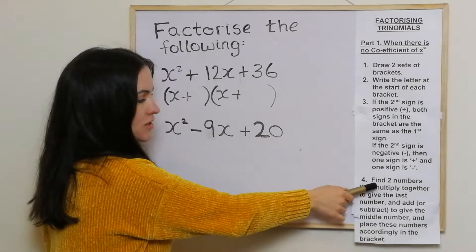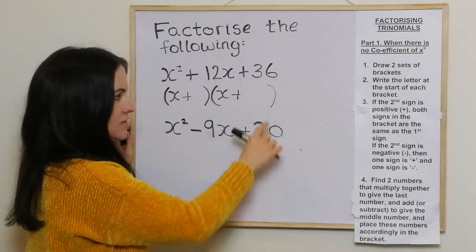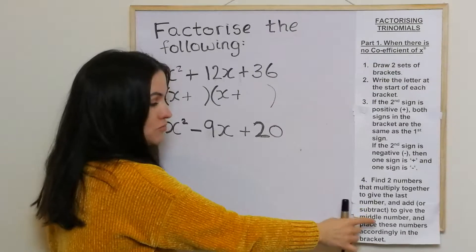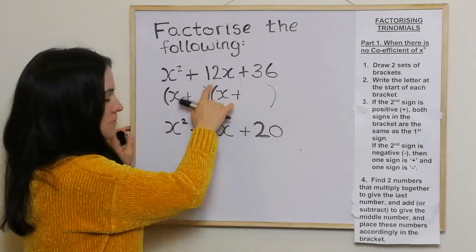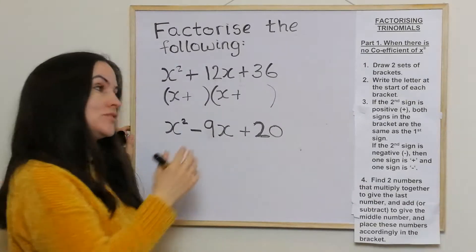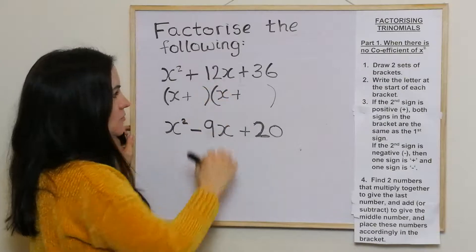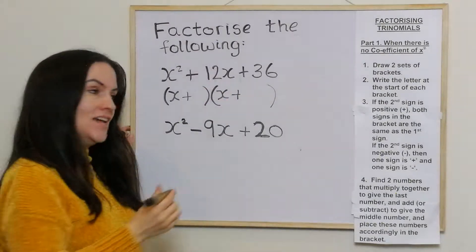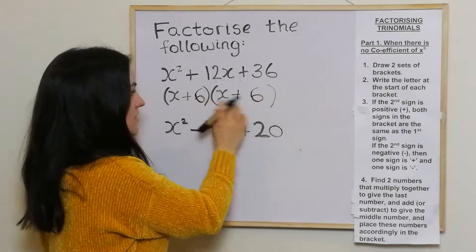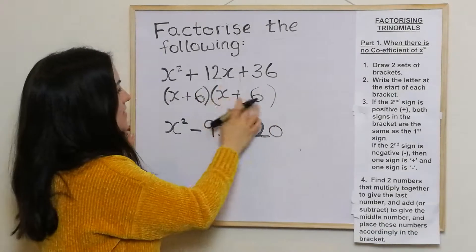In step four, we're looking for two numbers that multiply together to give the last number, and either add or subtract to give the middle number, then we place these in the brackets. Two numbers that multiply together to give 36 and add together to give 12 — it's going to be six and six, because six times six is 36 and six add six is 12.